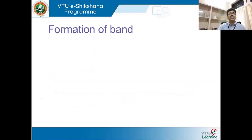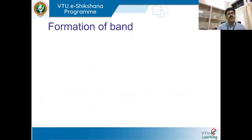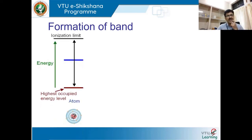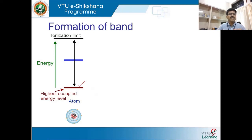Based on the quantum free electron theory approach, let us understand how a band is formed in a given atom. When we take an atom, it has various energy levels. We have the ground state energy level and the excited energy level, and various other energy levels above that.